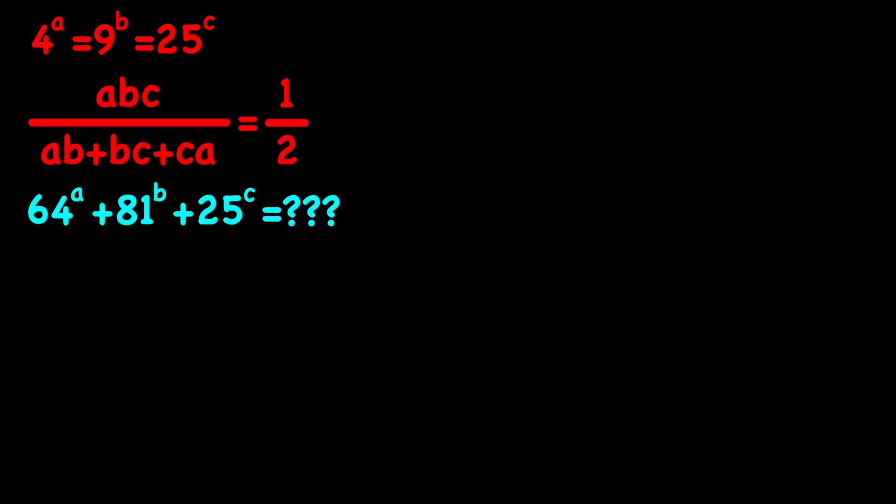Whenever we have too many variables in one problem, it might be a good idea to write them all in terms of one variable and then use that one variable to solve the problem. In this case we have 4 to the power of a equals 9 to the power of b equals 25 to the power of c, which means we have three different variables. So I'm going to say that all of these are equal to x, use this to solve a, b, and c in terms of x, and then plug those values into the second equation to solve for x.